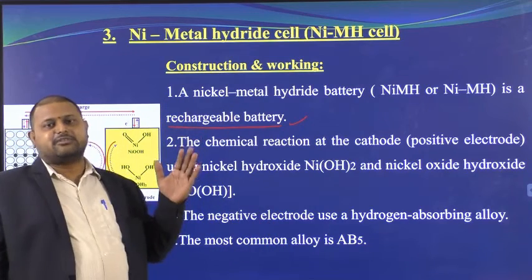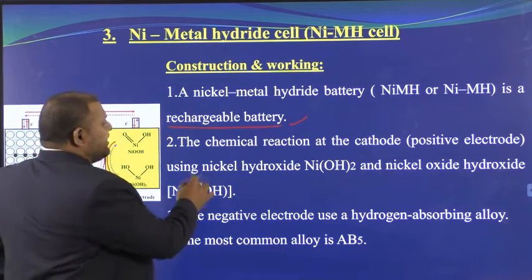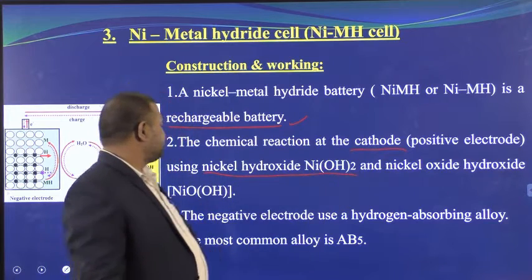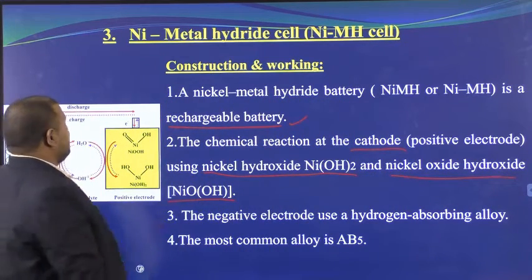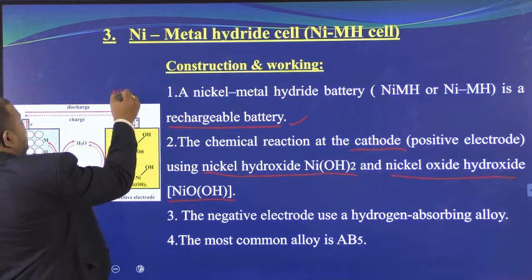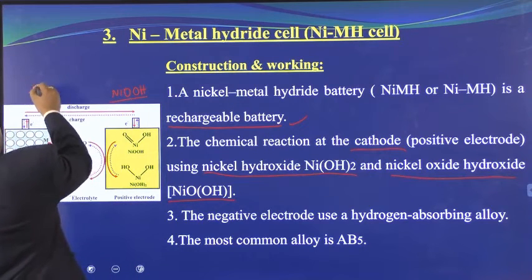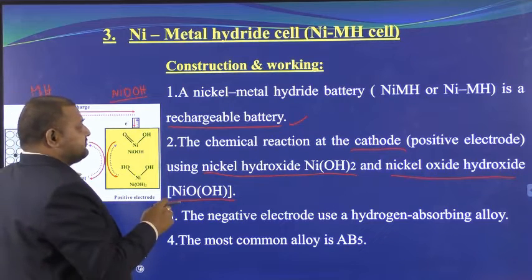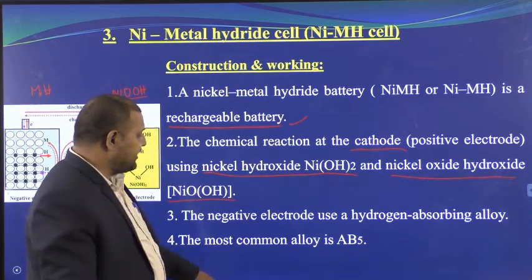Both nickel cadmium and nickel metal hydride batteries are rechargeable. The cathode in both is nickel oxide hydroxide (NiOOH). The anode in nickel metal hydride is metal hydride — whereas in nickel cadmium it was cadmium. The negative electrode uses a hydrogen-absorbing alloy, generally of the AB₅ type.